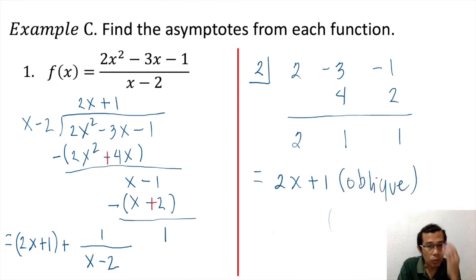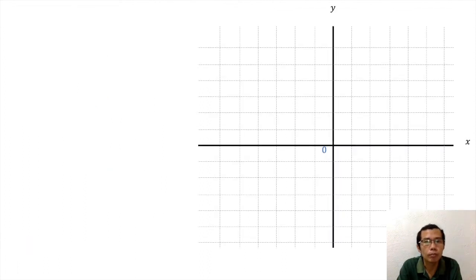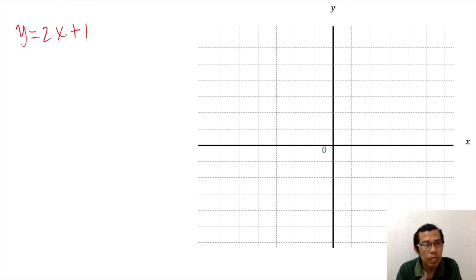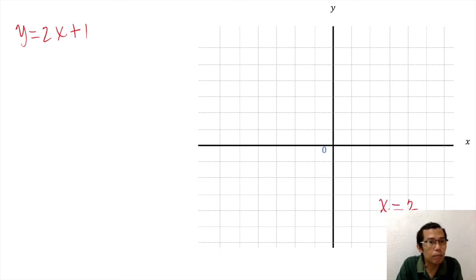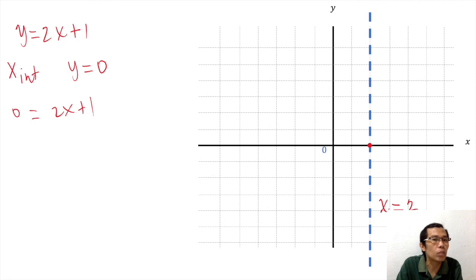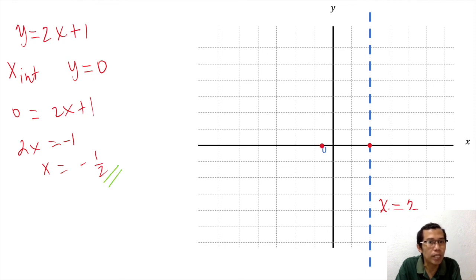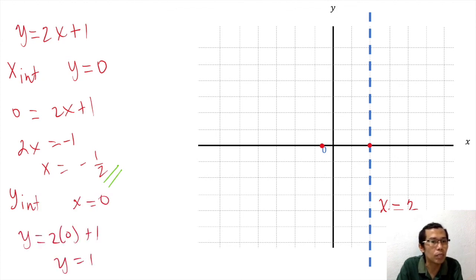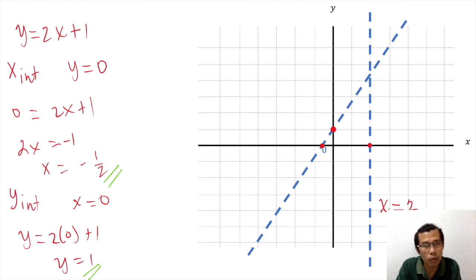The oblique asymptote is y equals two x plus one, and we also have the vertical asymptote x equals two. Since the asymptote is a line given by y equals two x plus one, we find the x and y intercepts to graph it. Setting y to zero gives x equals negative one half — that's our first coordinate, plotted on the graph. Setting x to zero gives y equals two times zero plus one, so y equals one. We connect the two points to draw the line. These are our asymptotes: the vertical asymptote x equals two and the oblique asymptote y equals two x plus one.